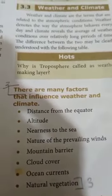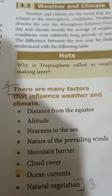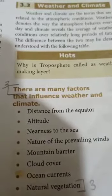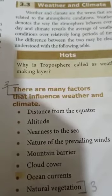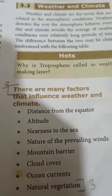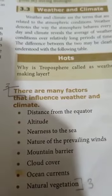To summarize, the factors that influence weather and climate are: distance from the equator, altitude, nearness to the sea, nature of the prevailing winds, mountain barriers, cloud cover, ocean currents, and natural vegetation. Thank you, students.